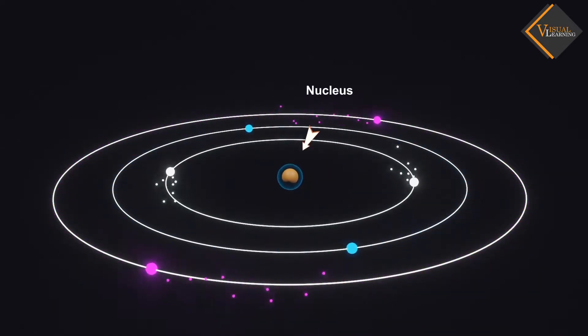Bohr's model consists of a small nucleus, surrounded by negative electrons, moving around the nucleus in orbits.